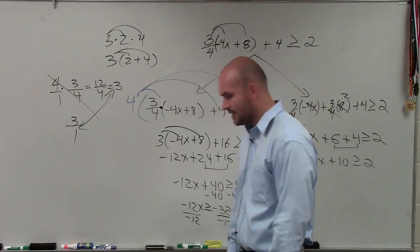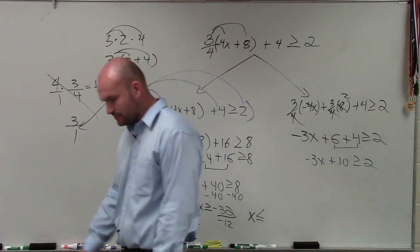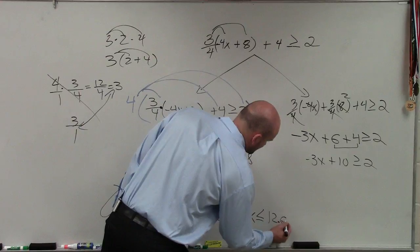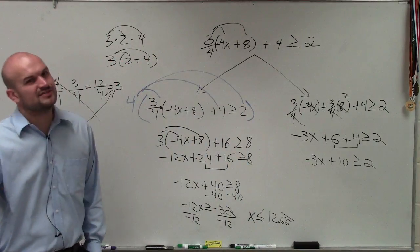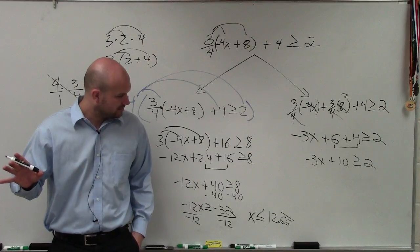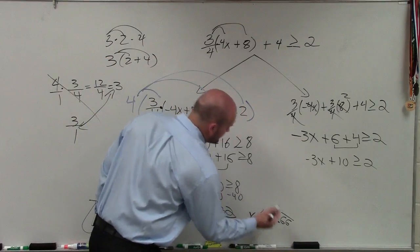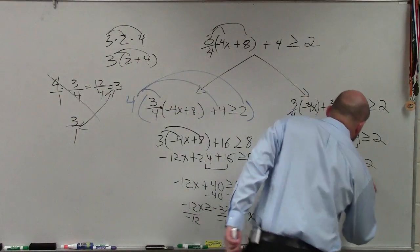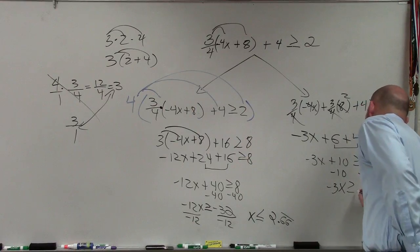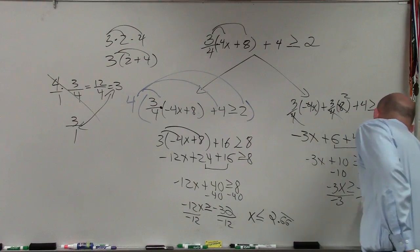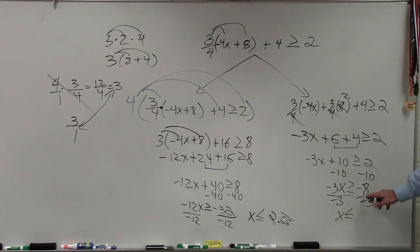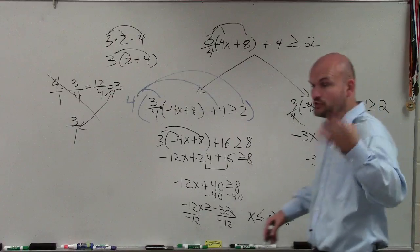24, yes. And 8/12 reduces down to 4/6, which is 2/3. And we can verify that over here too. If I subtract 10, subtract 10, -3x is greater than or equal to -8. How many times does -3 go into -8? It goes in there two times, with 2/3 remaining.